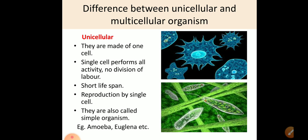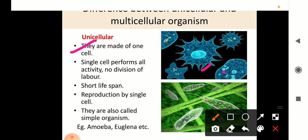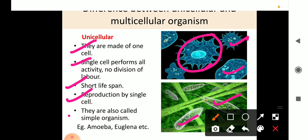Unicellular organisms are made up of one cell — you can see in the picture, this is Paramecium. A single cell performs all activities with no division of labor. All body activities — excretion, reproduction, respiration, feeding, nutrition, etc. — take place inside that single cell. Their life span is short. They reproduce by a single cell and do not have any particular organ for reproduction. They are also called simple organisms. Examples: Amoeba, Euglena, Paramecium.